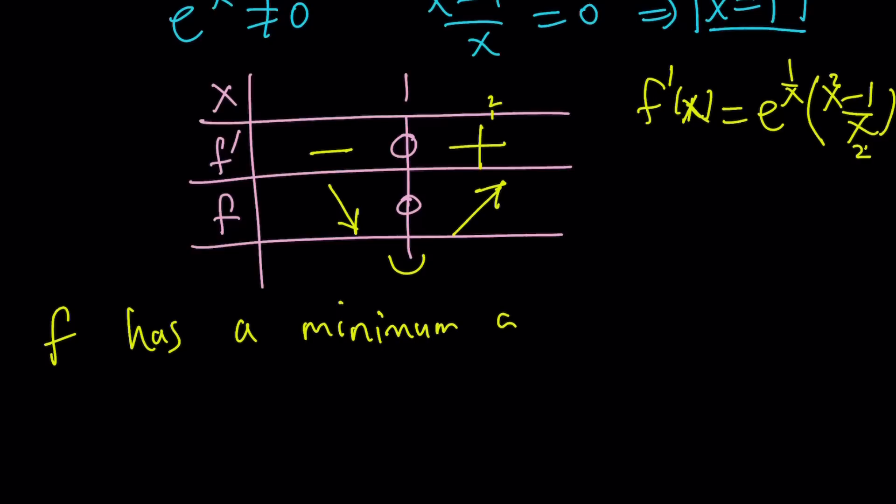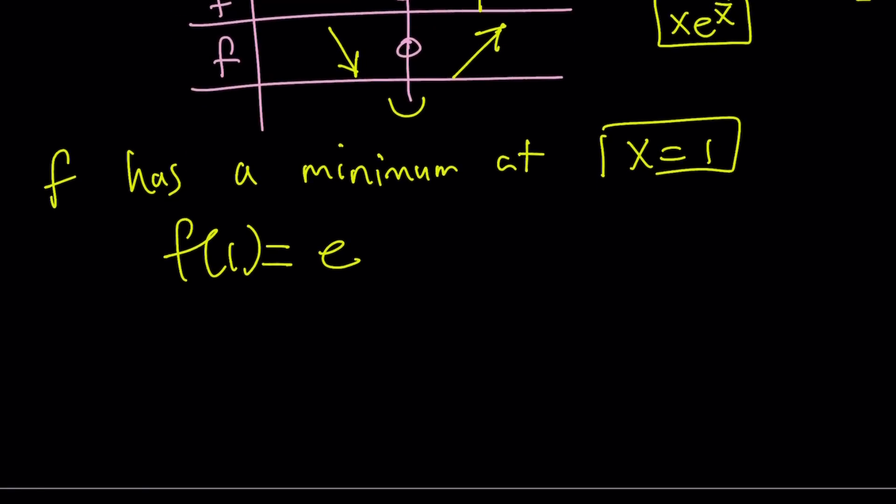But let's go ahead and evaluate f of one. If you replace x with one in the function, the original one, remember that was x times e to the power of one over x, that was f of x. If you replace x with one, you're going to get e. So f has a minimum at x equals one. The minimum value is e. Therefore, one comma e is a minimum.